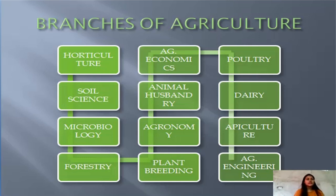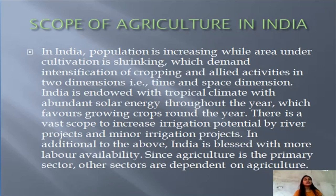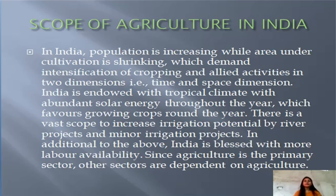Now we will see the scope of agriculture in India. Population is increasing while area under cultivation is shrinking, which demands intensification of cropping and allied activities in two dimensions: time and space. Allied activities include animal husbandry, dairy, poultry, pisciculture, bee keeping, and pearl farming.